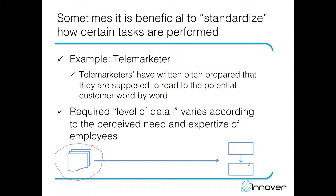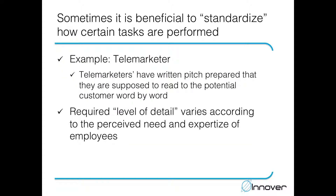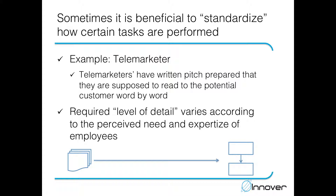To recap: every company has a quality management system, and it includes every single task that in one way or another relates to the quality the customer is experiencing. In some instances the company may find it beneficial to standardize some of those tasks in a unified way. That unified way can be really detailed or quite general, depending on the level of experience and expertise the employees have and what the company wants.